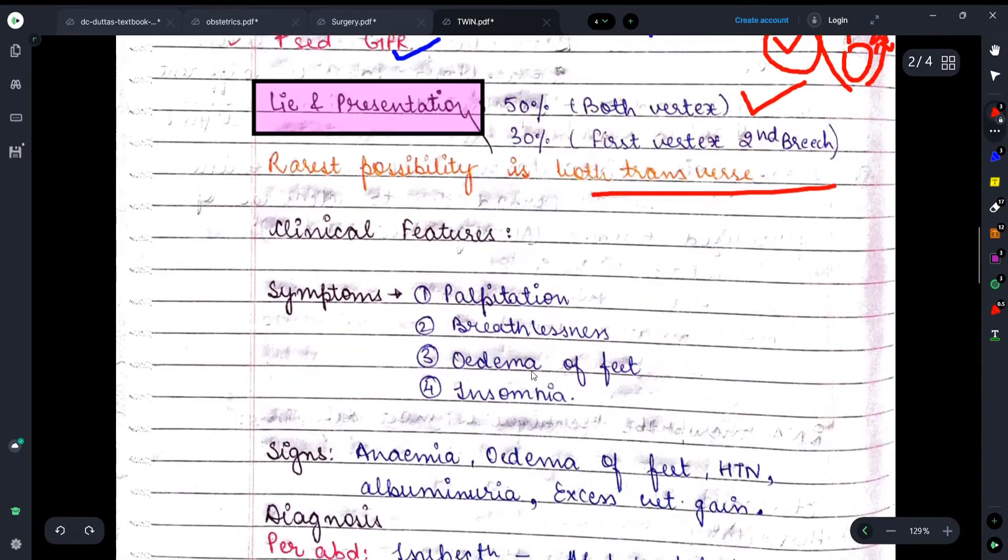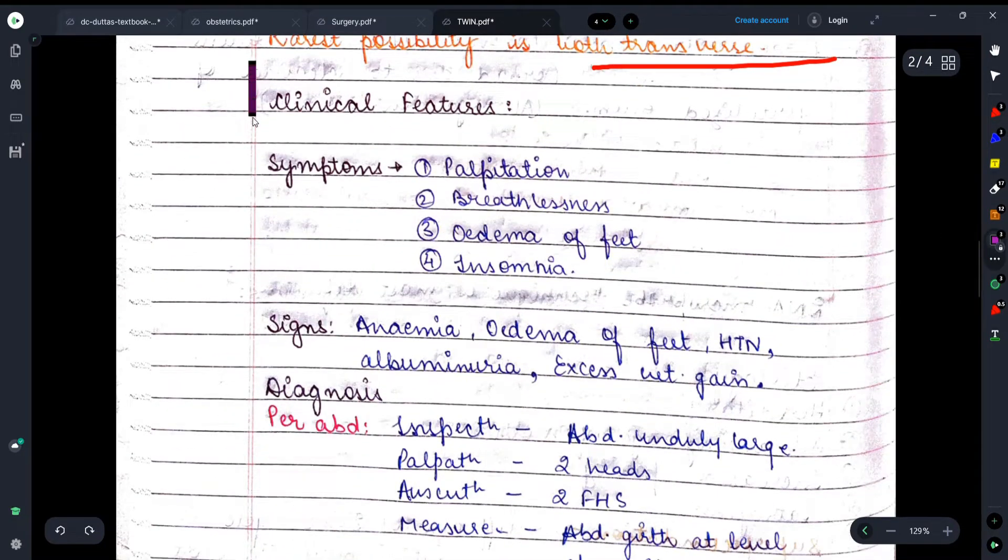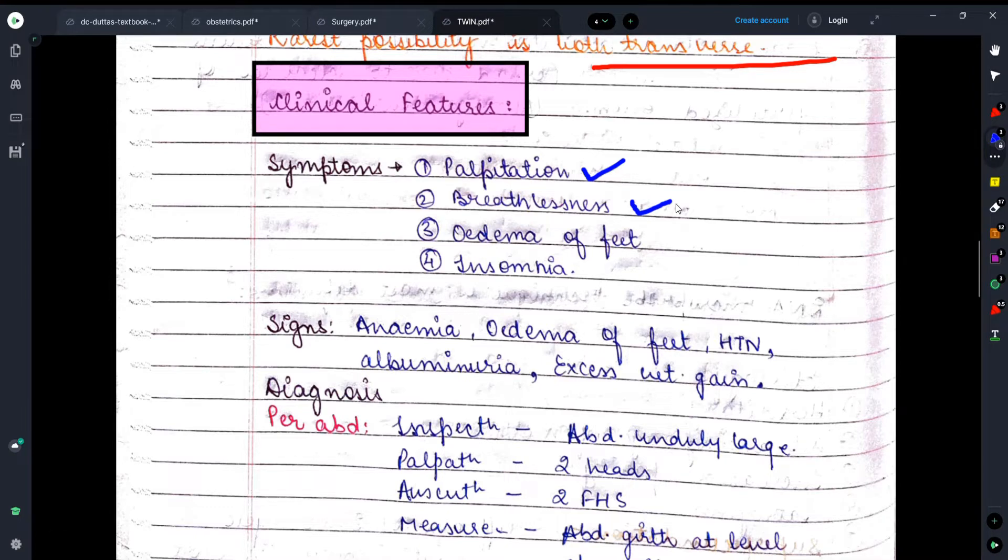Now moving on, let's discuss the clinical features - what symptoms will be seen in the female? First of all, let's look at the symptoms. Palpitation is mentioned here. We have already seen that cardiac output will increase, so the female may have palpitation. Breathlessness will occur just because the uterus is so bulky that the abdominal cavity puts pressure on the diaphragm, and that is why there are sometimes chances of breathlessness.